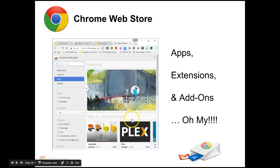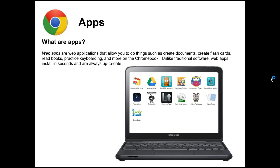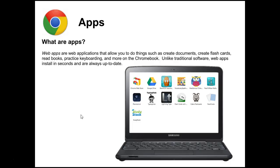So what are apps? Basically, on a Chromebook, apps are shortcuts to web applications that allow you to do things such as create documents, make flashcards, read books, or practice certain skills. What's great about web applications is that they install in seconds and they're always up to date — they update themselves automatically.